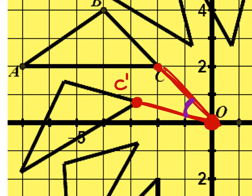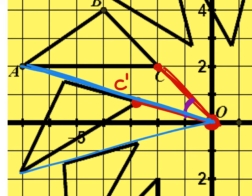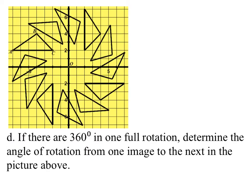We don't have to know specifically what that angle is right now, but if we compare A to A prime — connecting A with the center of rotation — you can see that this is the same angle as the angle between C and C prime. If there are 360 degrees in one full rotation, we can determine the angle of rotation from one image to the next.